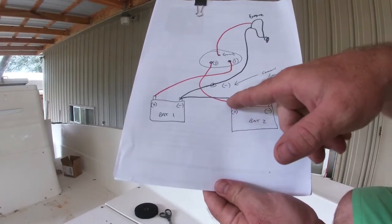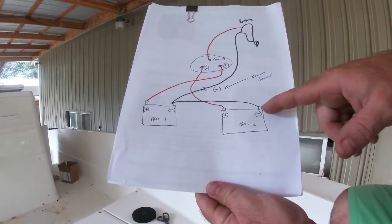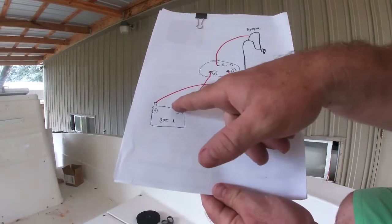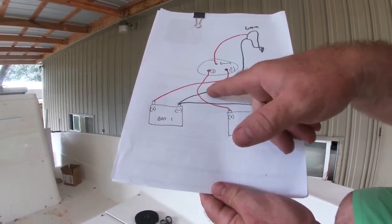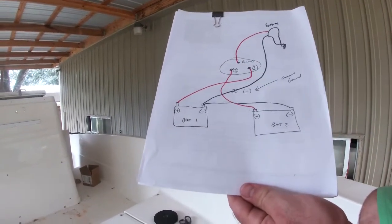Battery two, your positive will go all the way up here to lead two. And your negative, we're going to jump across here. We're going to connect both of these grounds, and then we're going to go to the common ground here. Okay, and that will be your common ground. So we run all your grounds off of that.